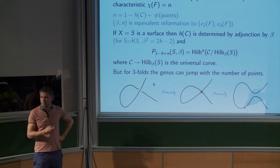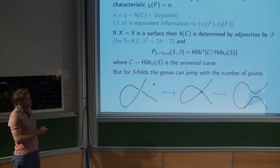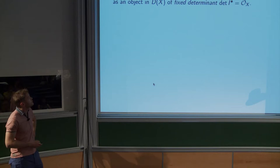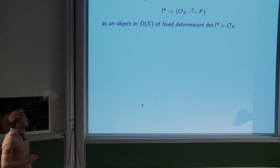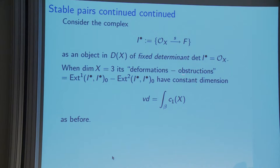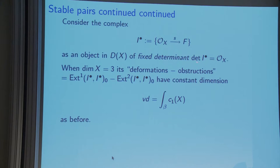This is why you can't just take sub-schemes: points can start coming off and you get curves plus points. In stable pairs the point is confined to live on the curve. For surfaces they're very simple, but for threefolds they're more complicated. Now working on a threefold: I form a complex in the derived category. Deformations minus obstructions have constant virtual dimension given by a Riemann-Roch formula, the same as before because I'm in dimension three. For threefolds, deformations of this complex are the same as deformations of the stable pair.